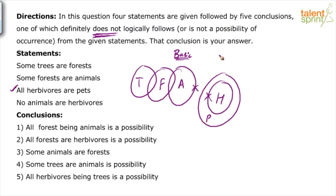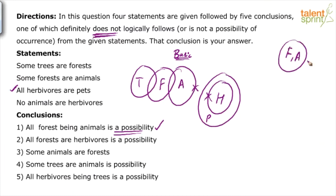Now let's look at the conclusions — find which are correct and which is wrong. Conclusion 1: all forests being animals is a possibility. He is talking about a possibility here. If he said simply 'all forests are animals,' we would say it's wrong based on the basic diagram. But since it's a possibility, we just need one diagram to prove it. The statement 'some forests are animals' can also be drawn as all forests inside animals — so all forests being animals is definitely possible.